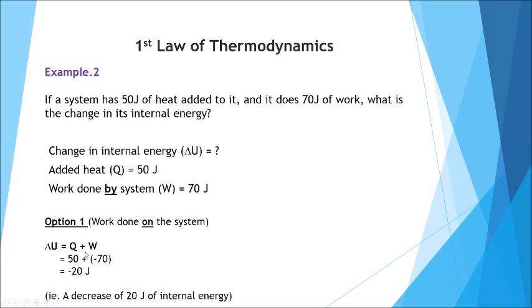Looking at this from a chemistry perspective or VCAA study design: delta U equals Q plus W. The heat added is 50 and the work done by the system is 70. Since W here is work done on the system, it goes in as negative 70. So the change in internal energy is minus 20, a decrease of 20 joules.